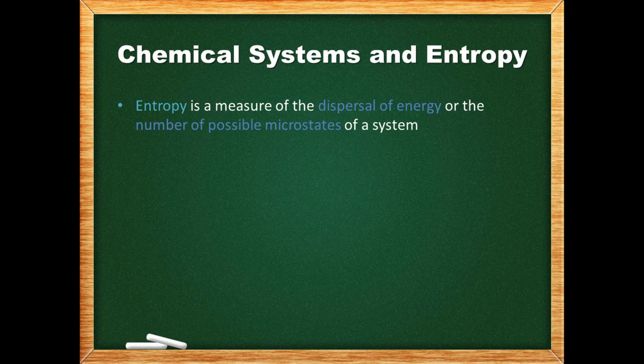Entropy is a measure of the dispersal of energy or microstates, sometimes simplified as the measure of disorder or randomness of the system. It is covered in much more depth in chapter 3 of the textbook, but we will take a quick look at it here.